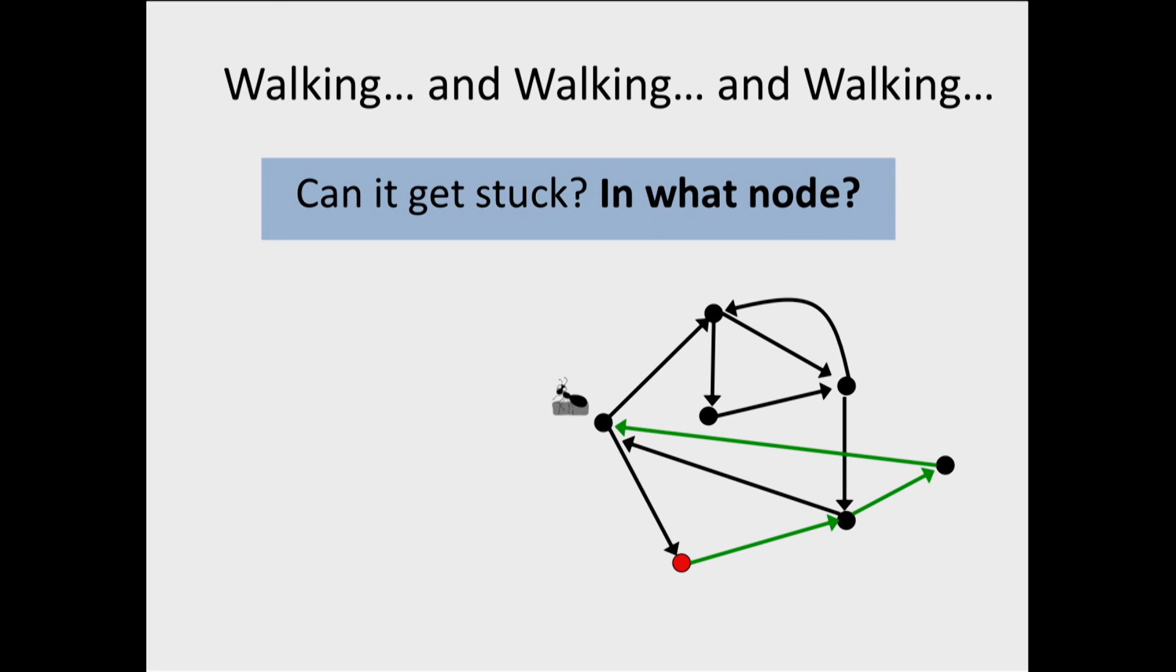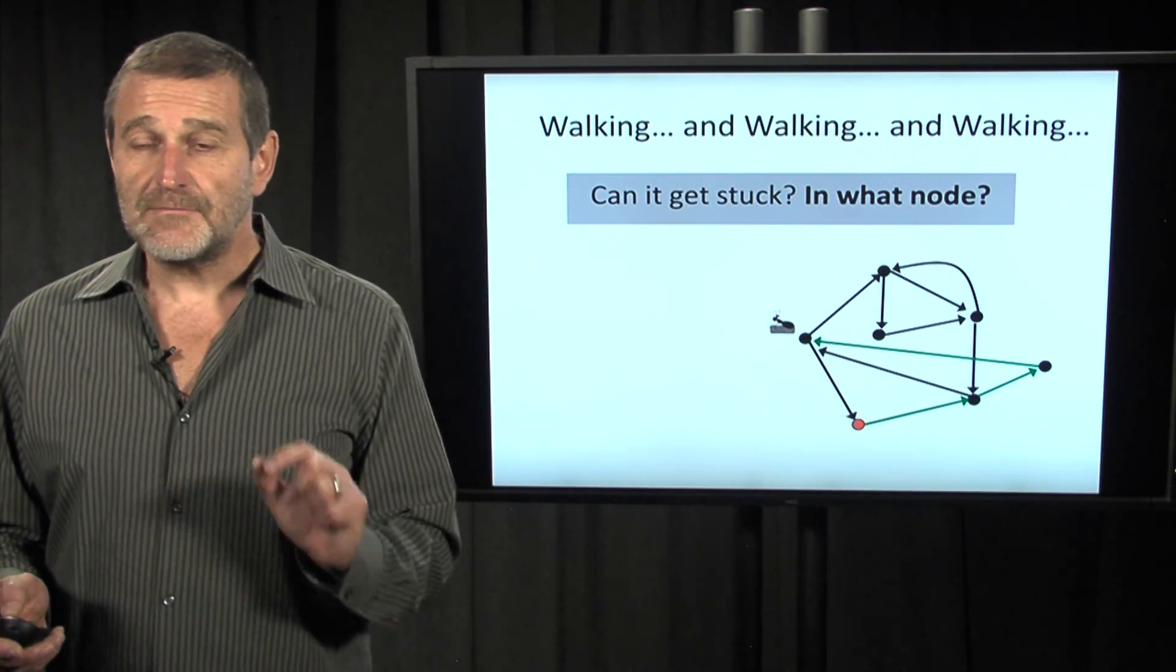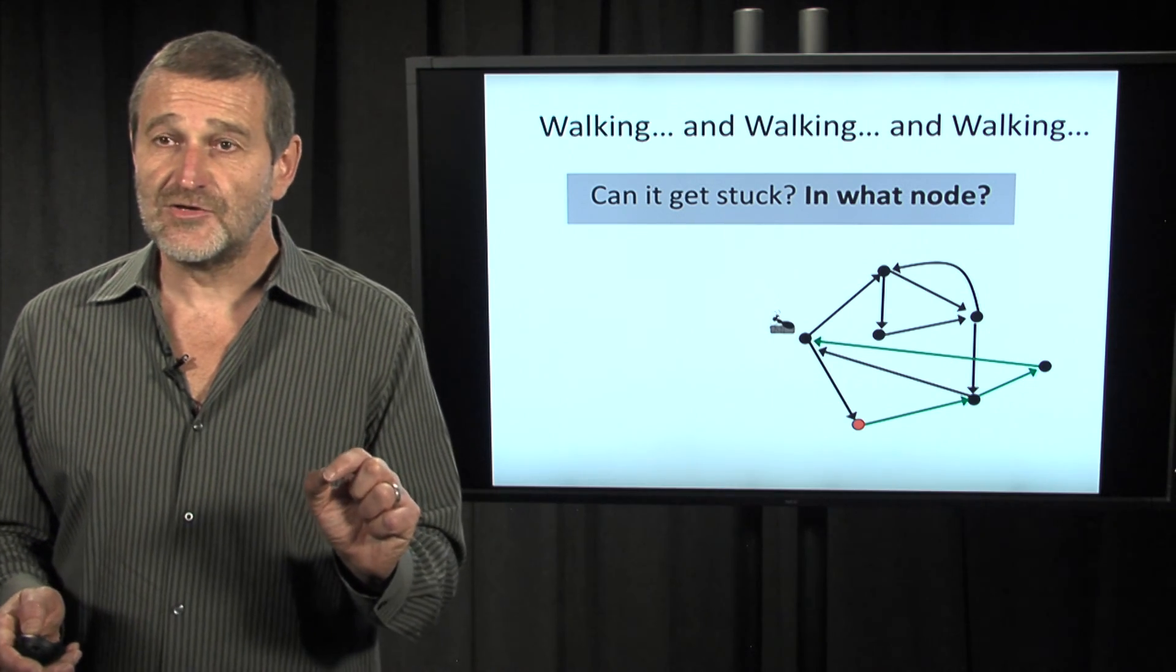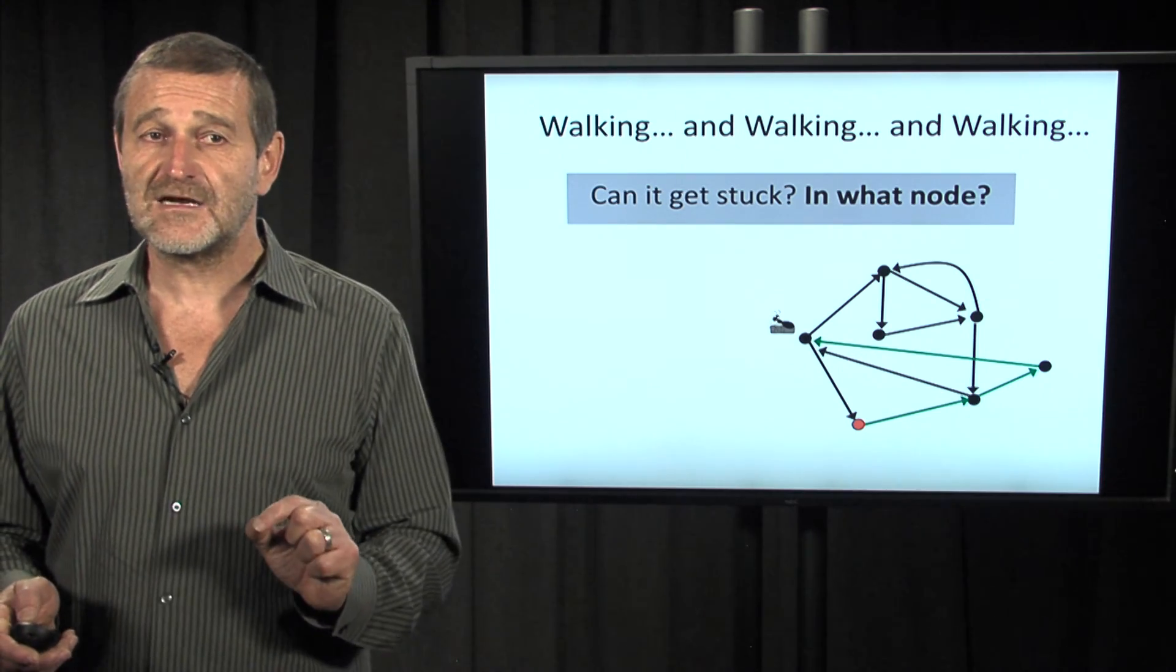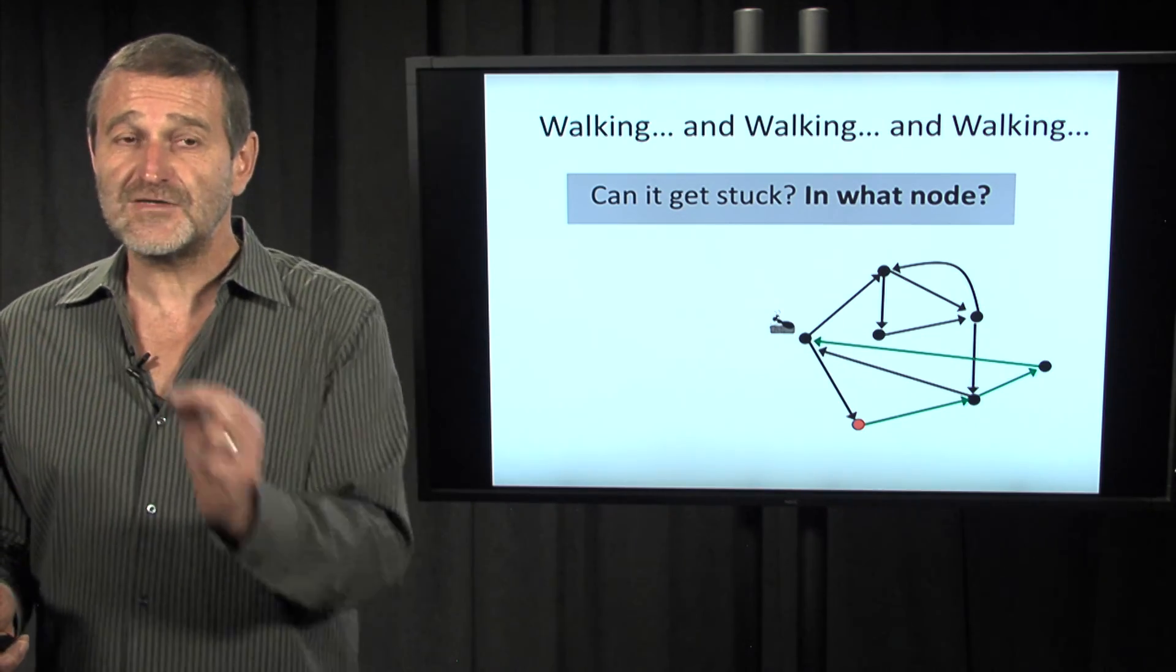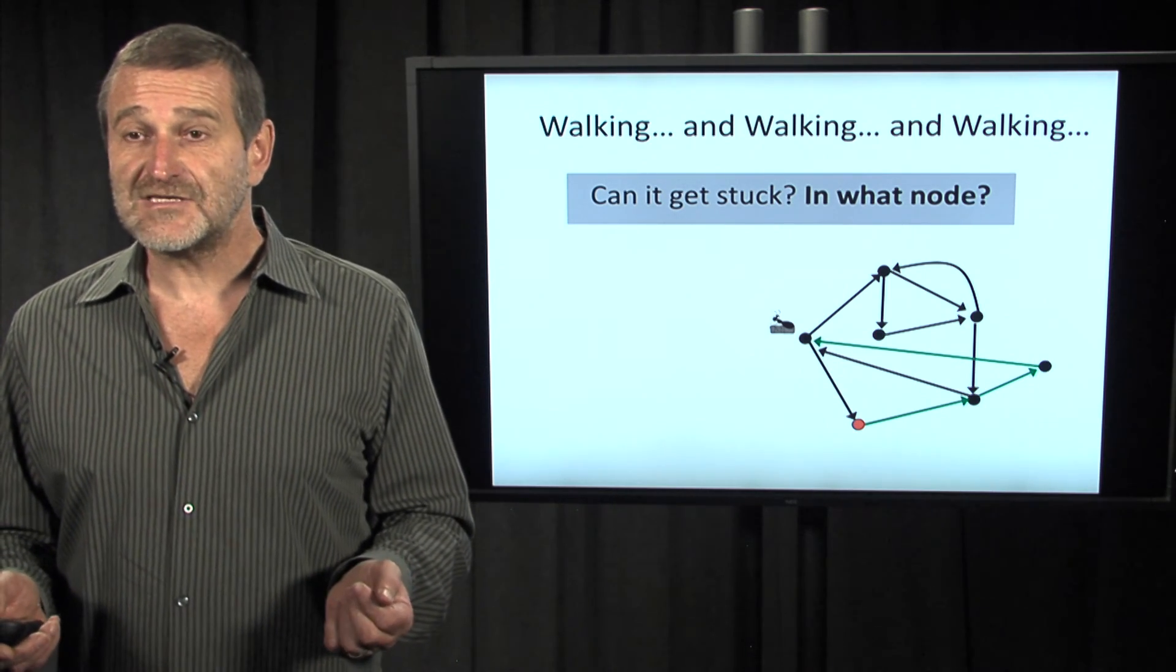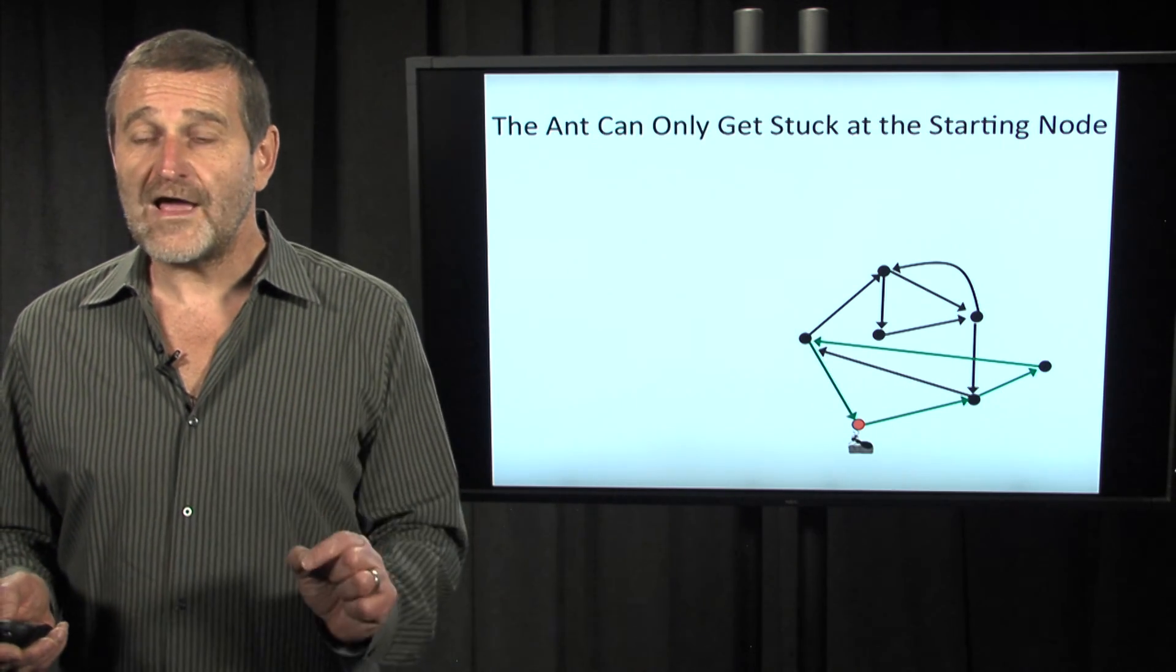Let's stop for a second and think: at what node can this ant possibly get stuck? Can it get stuck in the middle of the graph? Presumably not, because our graph is balanced. Therefore, every time the ant enters a node, there should be a way out. This condition holds for all nodes except for one. Which one? Of course, it's the starting node of the ant, because at this starting node the ant has already used the first outgoing edge. So it may arrive at this node and there will be no outgoing edges left. Therefore, the ant can only get stuck at the node where it started.